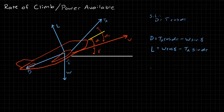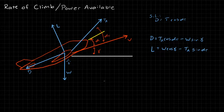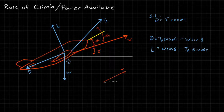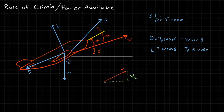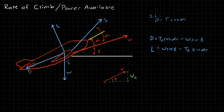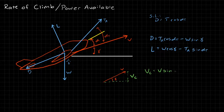We can actually find an expression for the climb rate. We have our velocity V, and this velocity is going to have two components: a horizontal component and a vertical component. Our vertical component is what we call the climb rate — the velocity upward — and the angle in between is of course the climb angle. So very easily, we can find that the climb rate vc equals V·sin(γ).